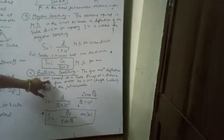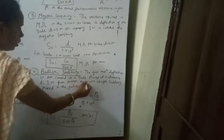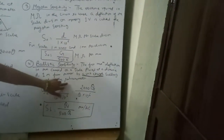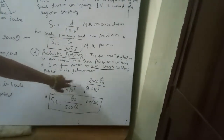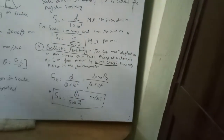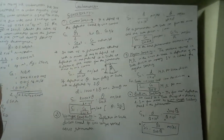The fourth type is ballistic sensitivity, defined as the first maximum deflection in mm on a scale placed 1 meter from the galvanometer mirror, caused by a unit charge suddenly passed through the galvanometer. It is given by Sb = θ/Q × 10⁶. With d = 2000θF, this gives Sb = θF/(500Q). Using θF = GI/K, the ballistic sensitivity can also be expressed in terms of G and K. That concludes the galvanometer constants: D, K, G, and the moment of inertia J.